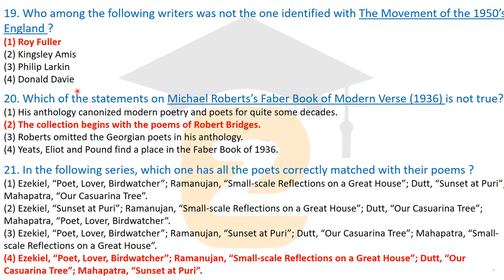Question twenty: which statement about Michael Roberts's 'Faber Book of Modern Verse,' published in 1936, is not true? The correct answer is that 'the collection begins with the poems of Robert Bridges' — this statement is not correct regarding this work. All other options are accurate statements about the 'Faber Book of Modern Verse.'